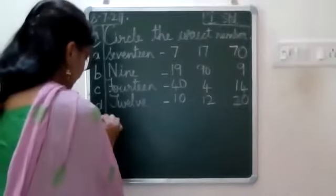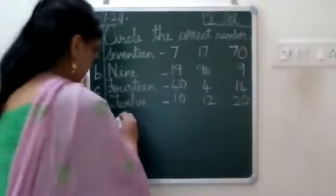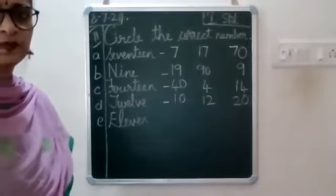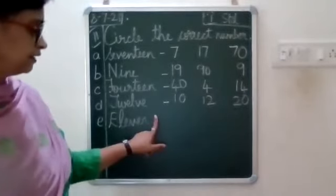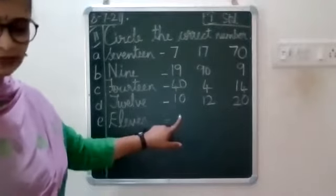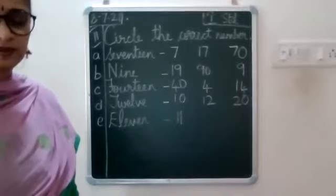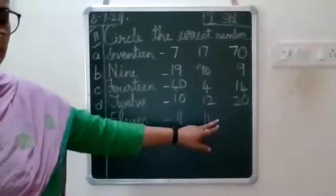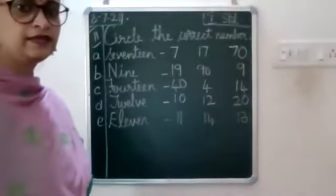Now after you finish D, leave a line and write E. Write capital E-L-E-V-E-N, 11. Put a dash under the same thing. Below 10 write 11, below 12 write 14, below 20 write 13, and below that write 13.